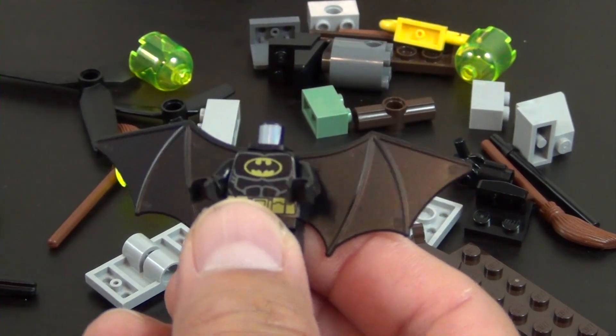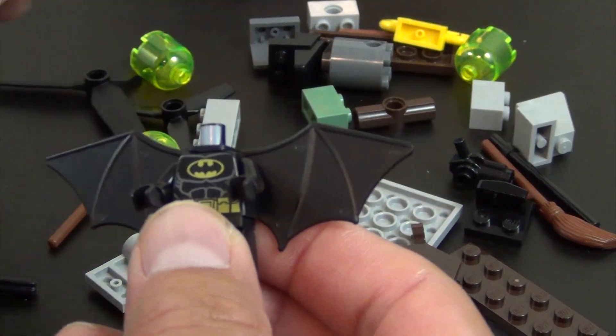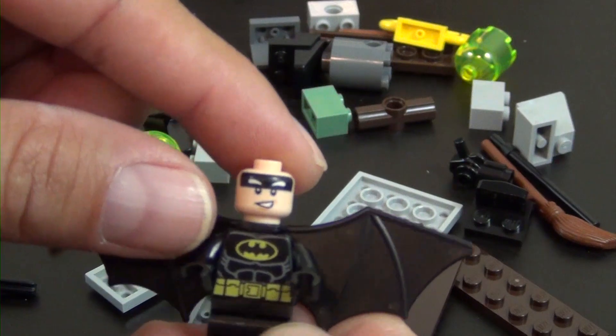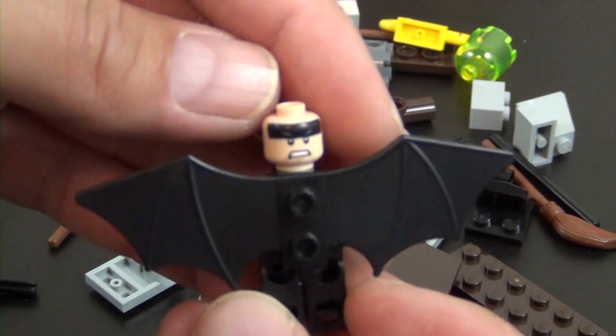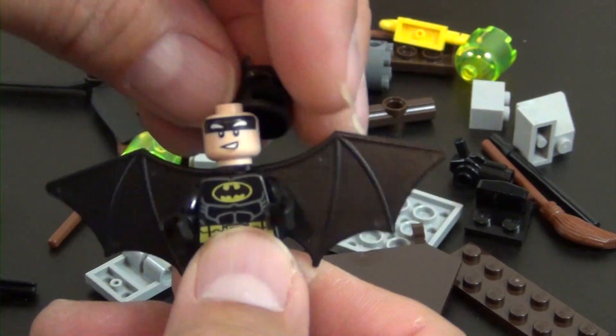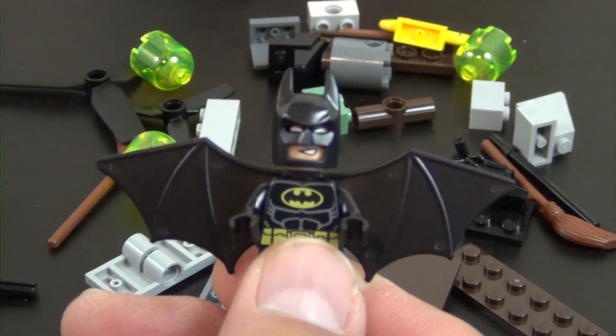So we put the wings on, put his head on. Double printed face, kind of has his little smirk and then there's kind of like a scared face. But really all you see through that is the mouth.